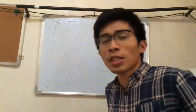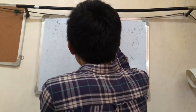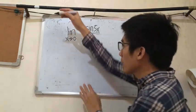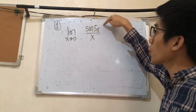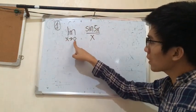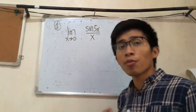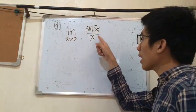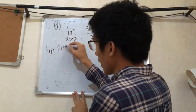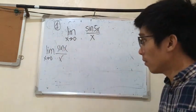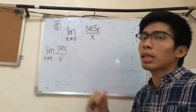Let's try some examples involving the special limit theorems. Example number one: the limit of sine 5x over x as x approaches zero. Take note that the term inside the sine function, 5x, is not the same as the denominator x. If you substitute zero directly, it becomes indeterminate. Once the limit is indeterminate, we have to find ways to evaluate it. You cannot conclude the limit is one simply because 5x is not equal to x.